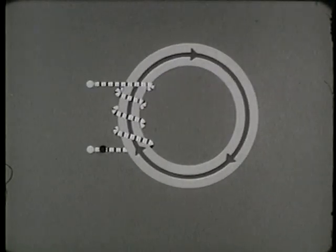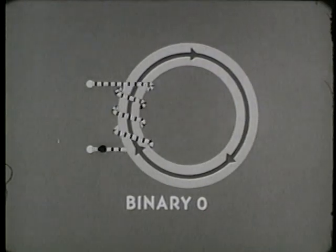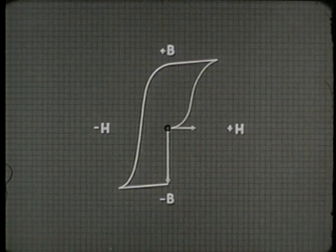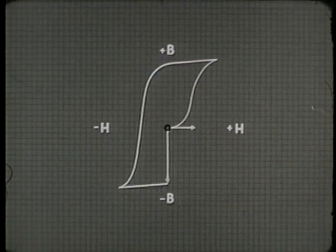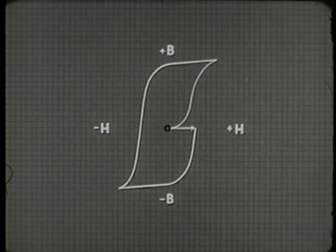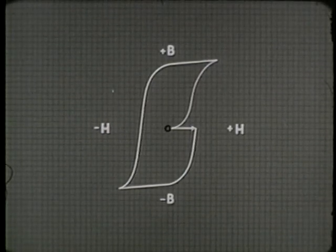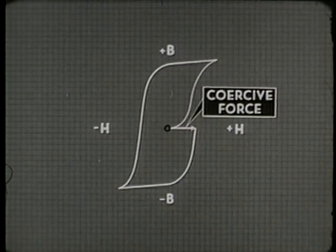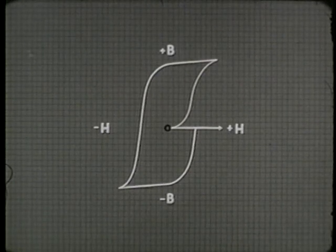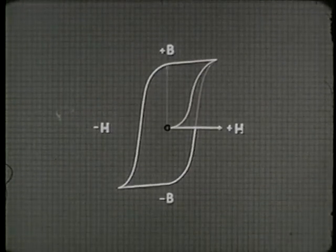Therefore, when dot current is fed into the core, magnetism builds up and the core is set to binary zero. Residual property keeps it there. To switch the core, we apply a positive magnetizing force — enough first to cancel out the negative residual magnetism, that is, to act as a coercive force in the opposite direction. Then, by adding more positive magnetizing force, we can bring the core material back to a state of positive saturation.